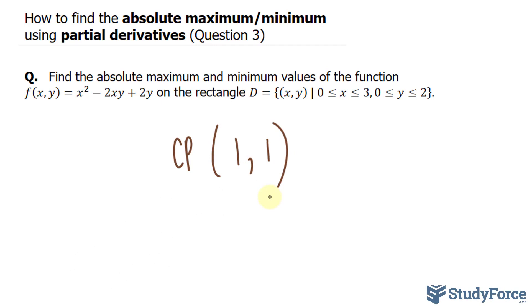Then you would substitute this point into your function and if you do that, 1 to the power of 2 is 1, negative 2 times 1 times 1 is negative 2, and 2 times 1 is 2. You end up with an output of 1.